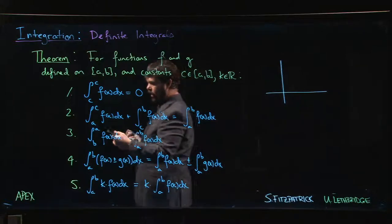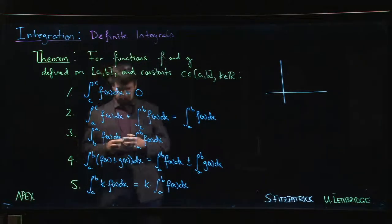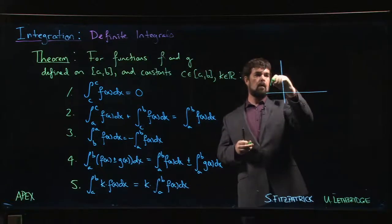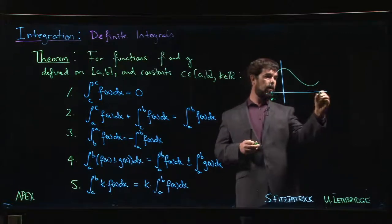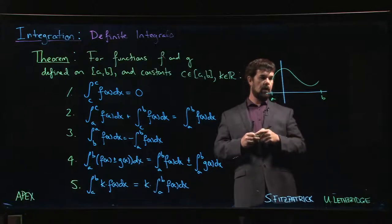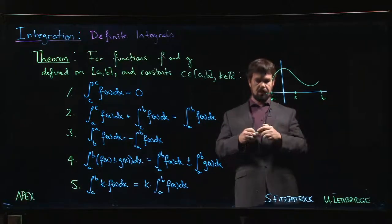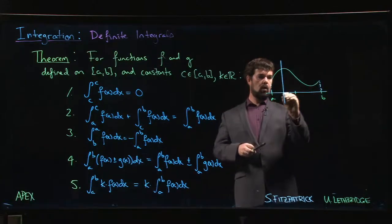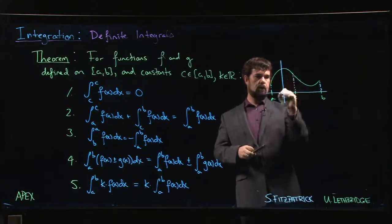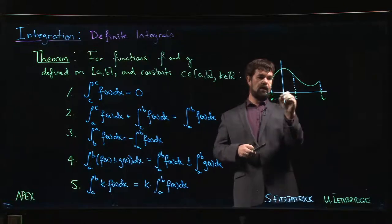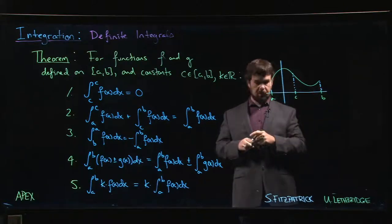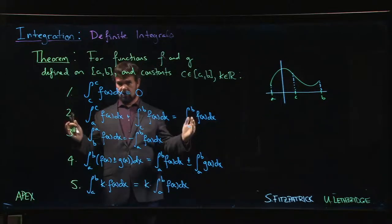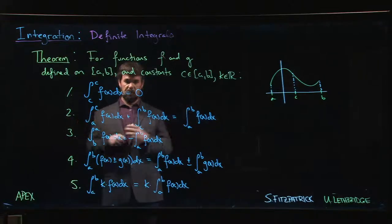This second one we also saw illustrated in the previous example, and it's also a fairly intuitive result. It says that if you're going from a to b and you have some intermediate value, let's say c, then the total area from a to b is the same thing as doing the area from a to c and then adding the area from c to b. So this is just saying that if you have some region and you divide it into two pieces, then the total area is just the sum of the resulting areas of the two pieces.